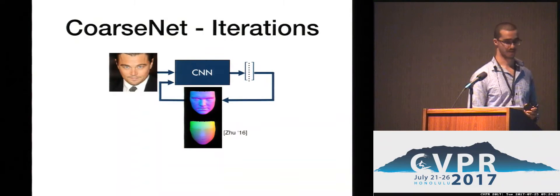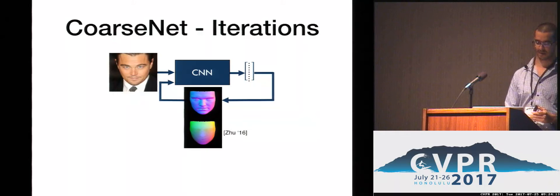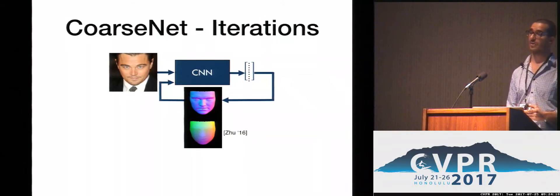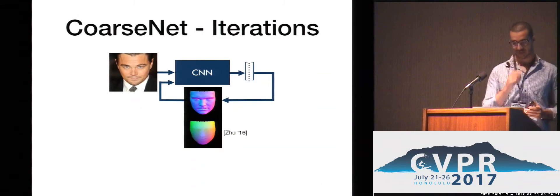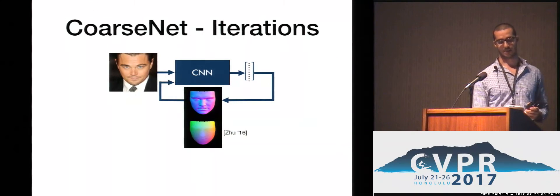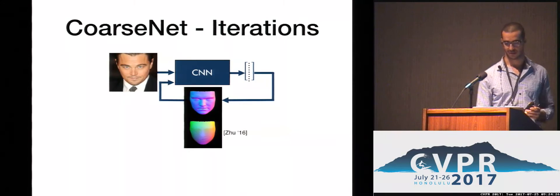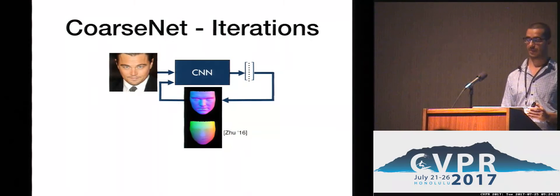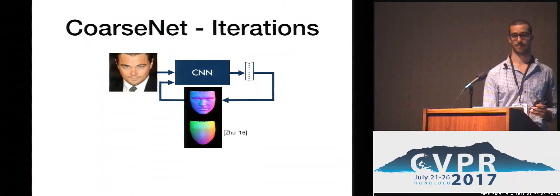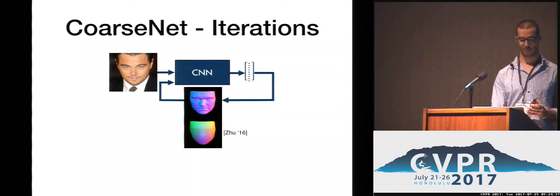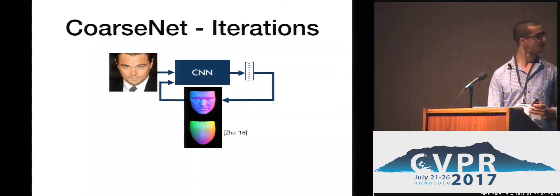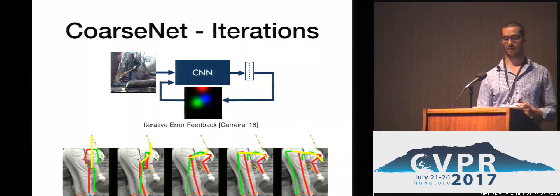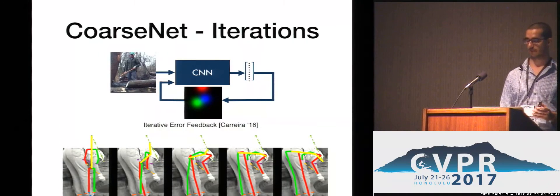As mentioned earlier, coarse-net is iterative. In each iteration, we feed the input with feedback channels representing the current output of the network. The first feedback channel is a normal map representing the local structure of the face. The second feedback channel is a universal parametrization of the face, which represents the global structure. Similar to other pose estimation techniques, we found that an iterative framework performs better than a single-pass network.